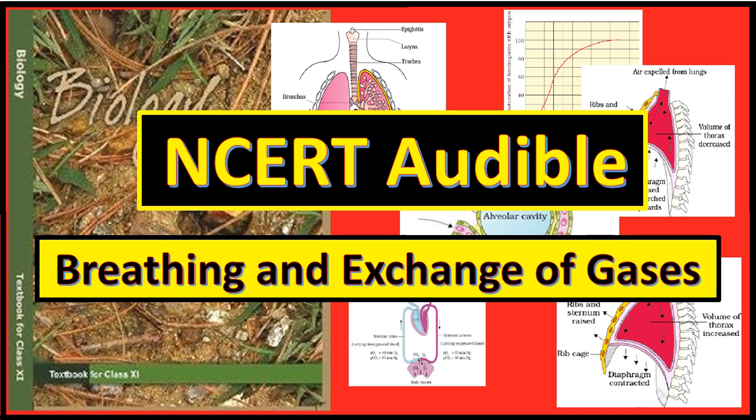Vital capacity is the maximum volume of air a person can breathe in after a forced expiration — this includes the expiratory reserve volume, the tidal volume, and the inspiratory reserve volume. Or equivalently, it is the maximum volume of air a person can breathe out after forced expiration. Total lung capacity is the total volume of air accommodated in the lung at the end of a forced inspiration. This includes the residual volume, expiratory reserve volume, tidal volume, and inspiratory reserve volume — or vital capacity plus residual volume.